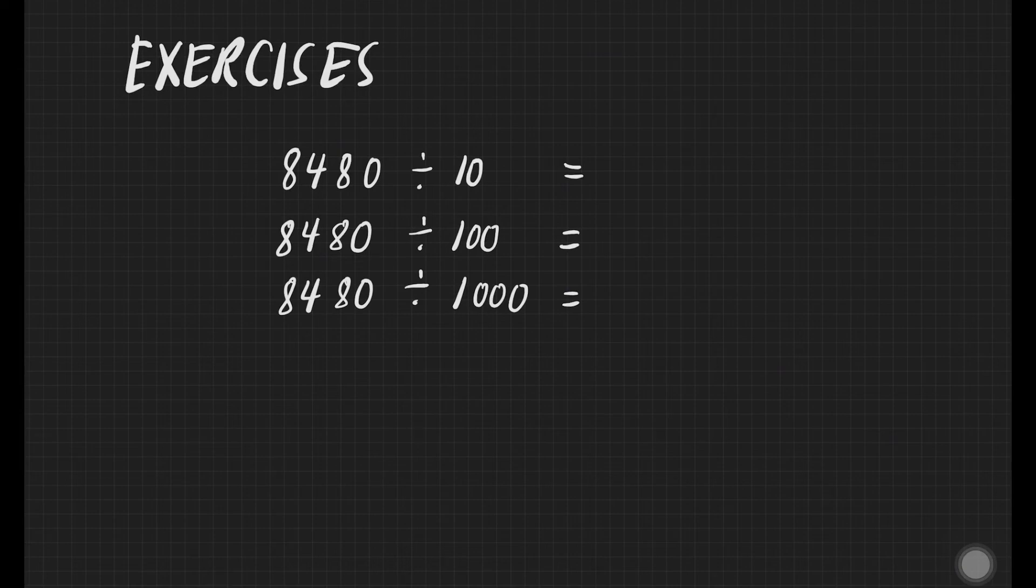Let us have some exercises. For the first number, we have 8,480 divided by 10. Just cancel one zero from dividend and one zero from divisor and we'll get 848 as our final answer.